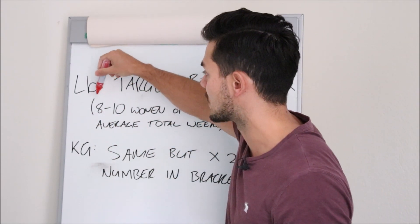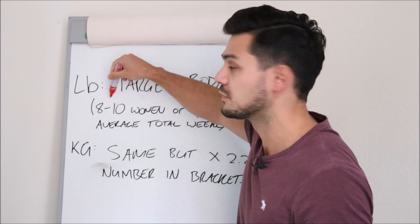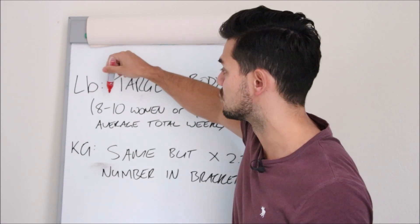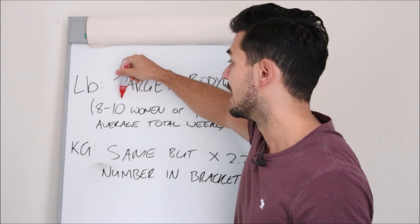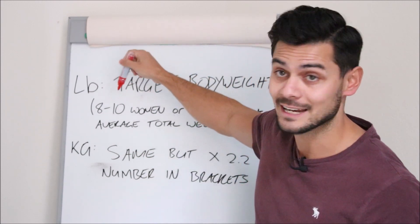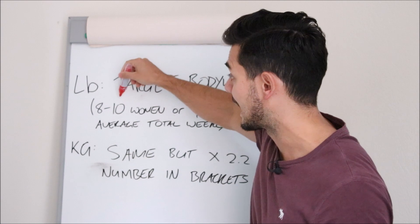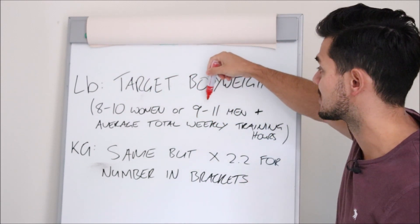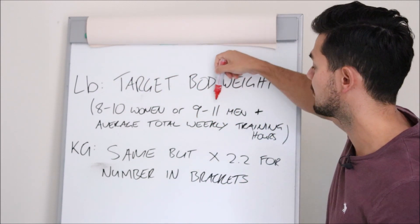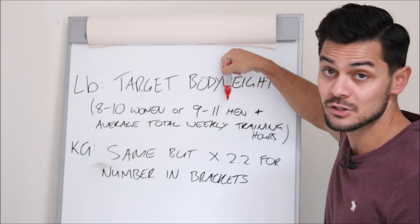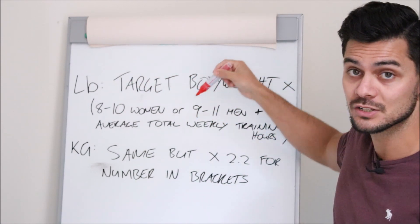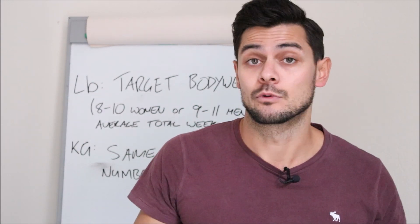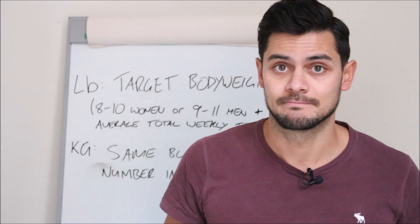This is basically an activity level. Sedentary women choose eight. If you're on your feet a lot for work, you could choose nine. And if you're really active, you'll choose 10. For men, it's the same thing — nine to 11. The reason the number is slightly higher is because men tend to have higher calorie requirements on average.